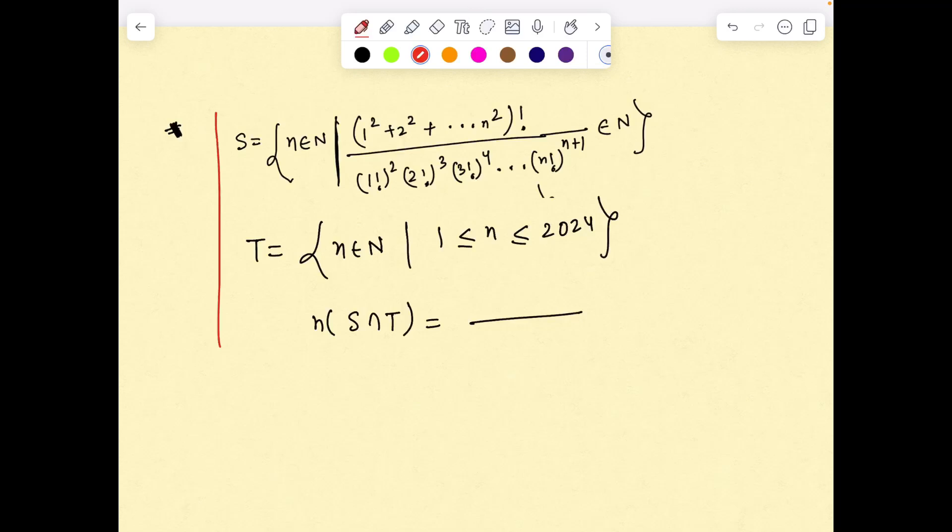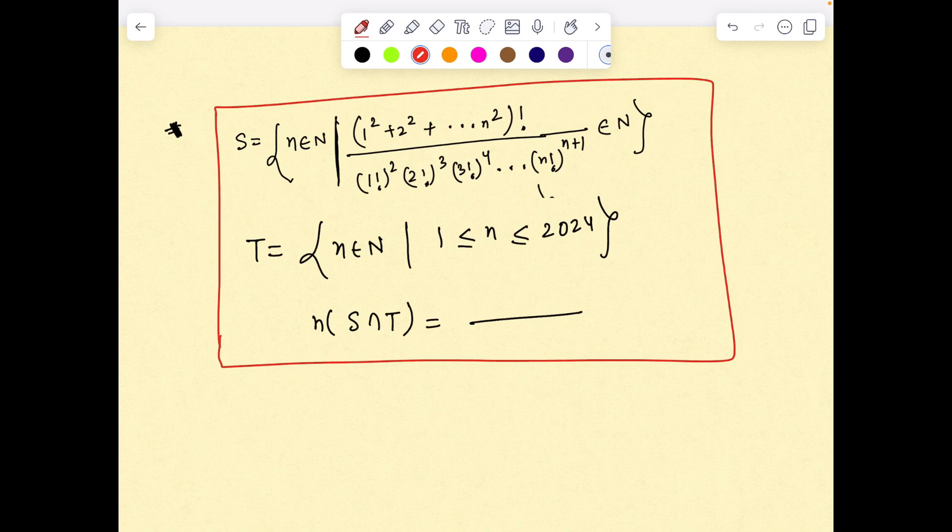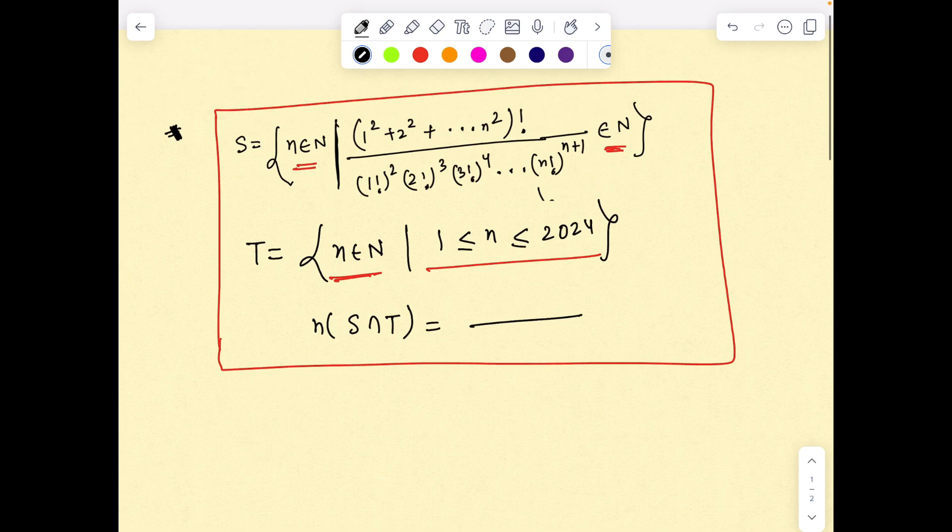Let us try this question from set theory and binomial theorem combined. S is the set of all natural numbers n such that n² factorial divided by 1 factorial, 2² factorial, up to n² factorial, (n+1)th power is also a natural number. This question can be asked in both set theory as well as binomial theorem.